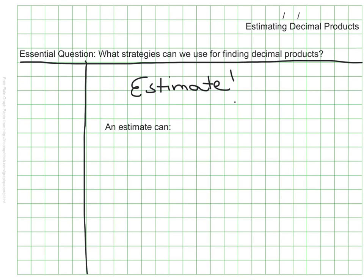Estimates can do two really useful things for us. An estimate can help us decide if our calculation is correct. An estimate can also help us know where a decimal should go in our answer.